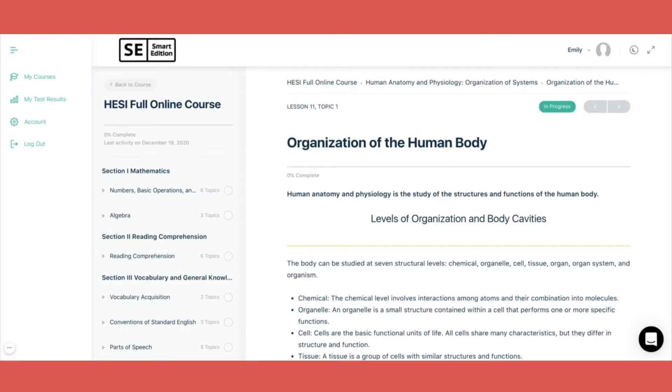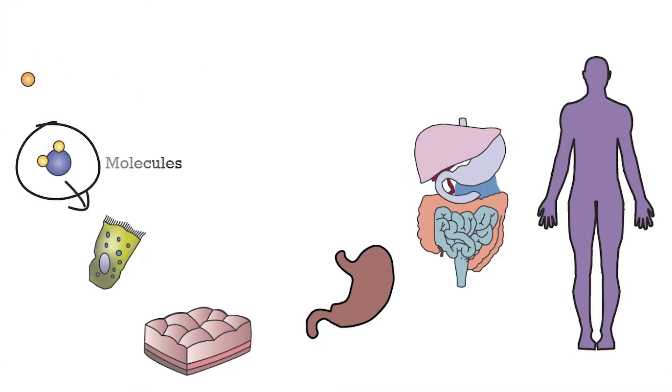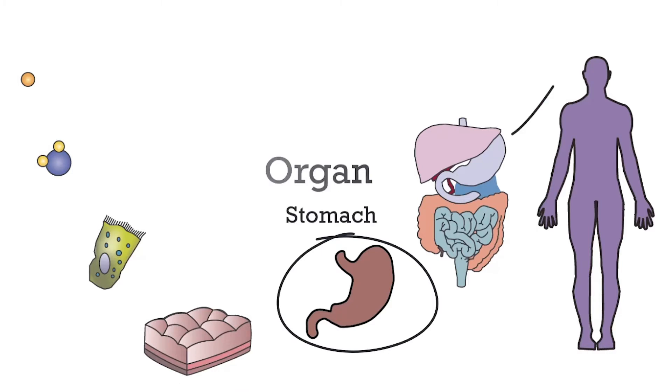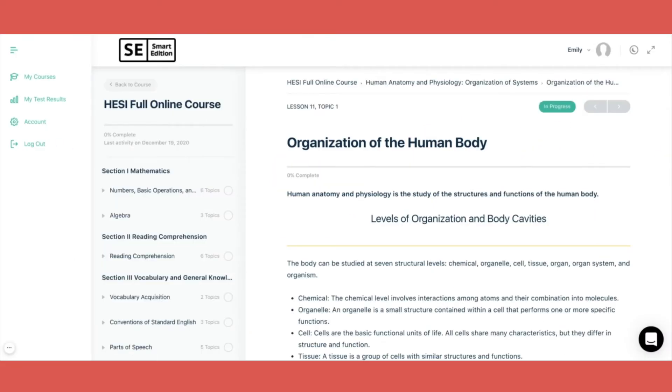Hey everyone, thanks for joining us. This is Emily from Smart Edition Academy. In this video, we are going to review the organization of the human body. We're going to go over the levels of organization, body cavities, tissues, homeostasis, and feedback mechanisms. This is all really important information to know for the HESI A2, so stay tuned.